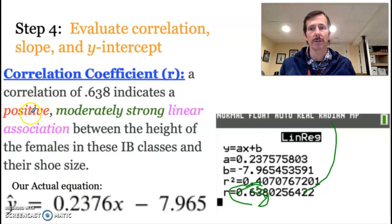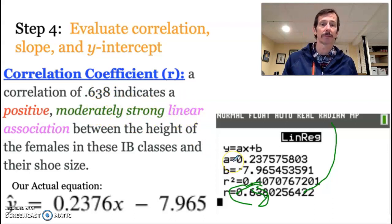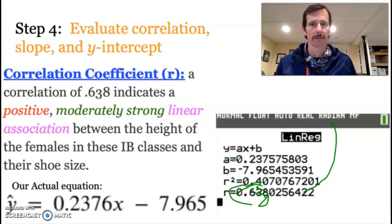Notice there's three things we're talking about: the direction, whether it's positive or negative. How strong it is in terms of its strength, and that it's linear. Based on that, I would say that the correlation of 0.638 indicates a positive, moderately strong linear association between the height of females in these IB classes and their shoe size.